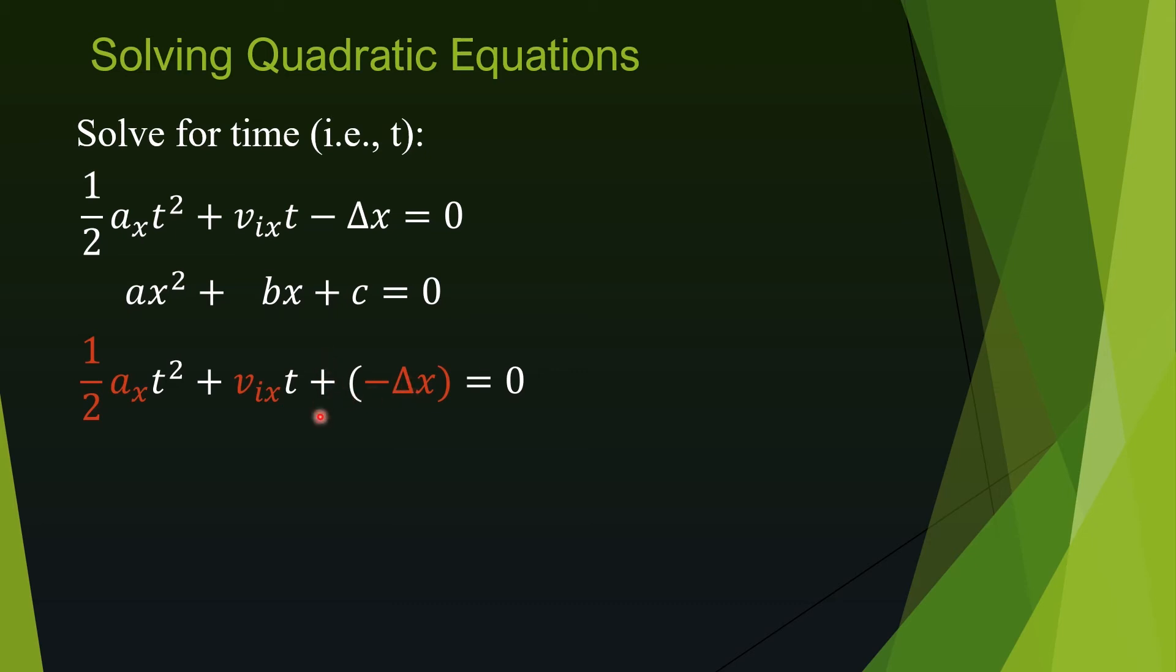Therefore I am putting a negative Δx inside parenthesis here, so that I can write positive here. And it looks just like this one. You don't have to do it. Simply remember that the c is negative Δx. Figure out a, b, c for our equation.